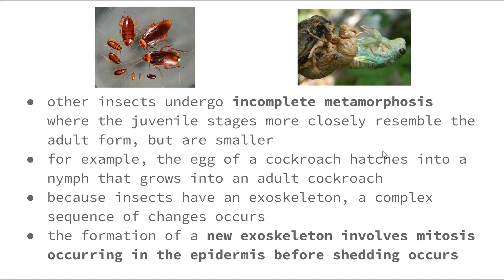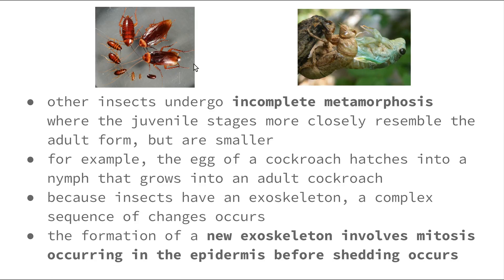Other insects undergo incomplete metamorphosis, where the juvenile stages more closely resemble the adult form but are smaller. Cockroaches are an example — the egg hatches into a nymph, which is basically just a smaller version of an adult cockroach with no real difference in structures, only size. Because insects have an exoskeleton, a complex sequence of changes needs to take place for the organism to remove that exoskeleton so they can grow bigger. The formation of a new exoskeleton involves mitosis occurring in the epidermis, causing the previous exoskeleton to burst, and the larger insect emerges.